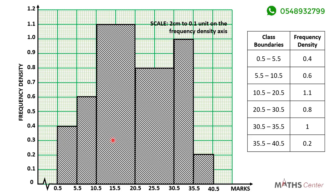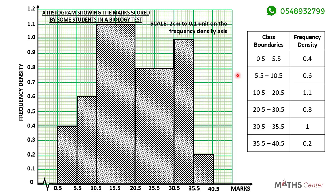We can add some design to make the histogram look neat. The title comes from the question: the histogram shows the marks scored by some students in a biology test. This is how to draw a histogram for grouped data where the class widths are not the same. In that case, plot frequency densities on the vertical axis and class boundaries or class midpoints on the horizontal axis. The frequency density for each class equals the frequency divided by the class width.